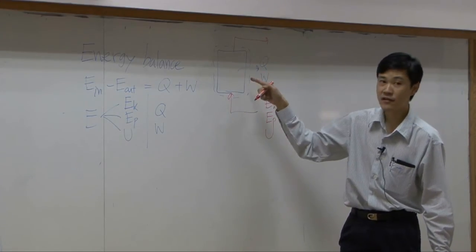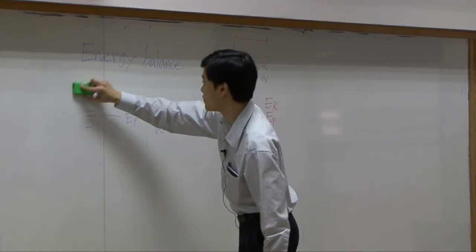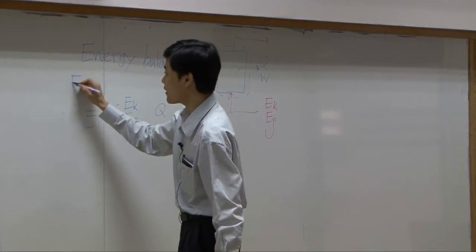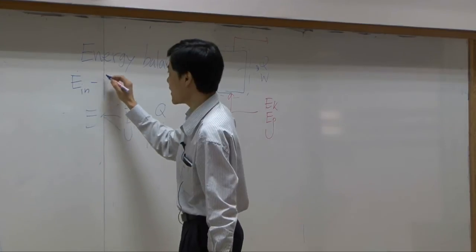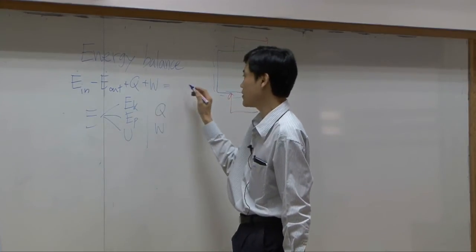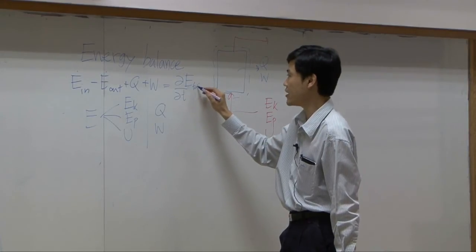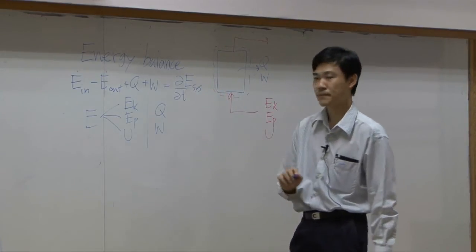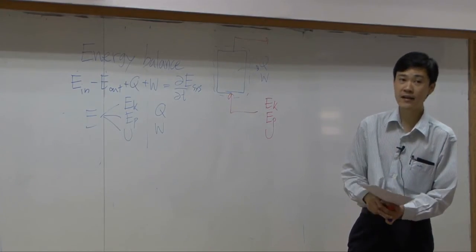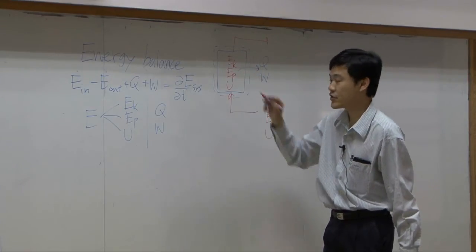Inside here is considered the, if you write it down for open system. For open system, you will have rate of energy in minus rate of energy out plus Q plus W equal to the change with respect to time of total energy in the system. E of the system is also divided into three parts: kinetic, potential, and internal.